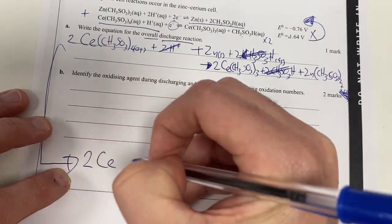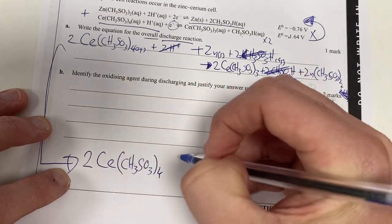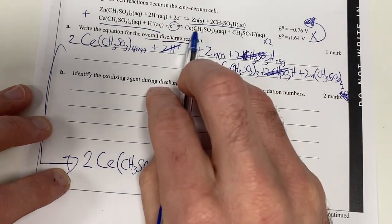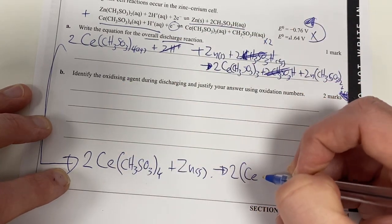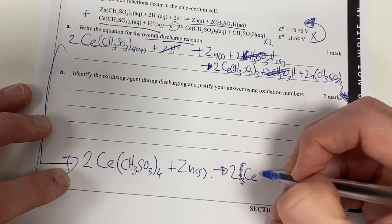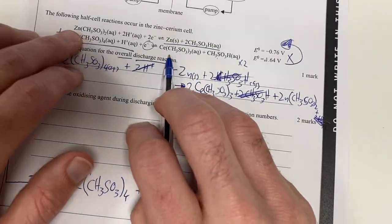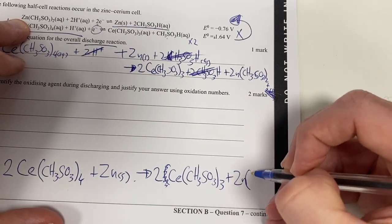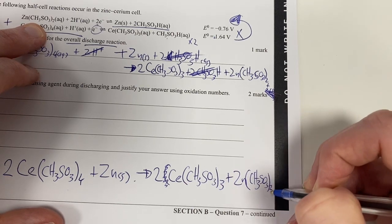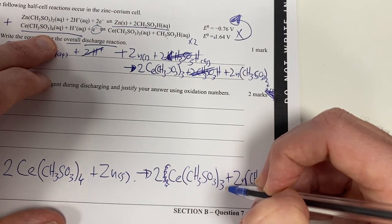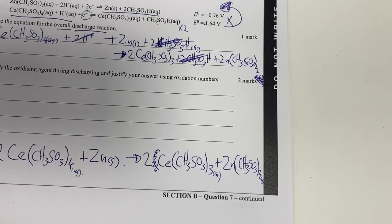What that leaves me with then is two of these things, 3SO3)4 reacting with a zinc solid. And that's going to then form two of these things. I don't need a bracket there, take the bracket away. CH3SO3)3 and one of these things, Zn(CH3SO3)2 aqueous. That's all aqueous apart from the zinc. So therefore I've got this happening as my overall reaction.